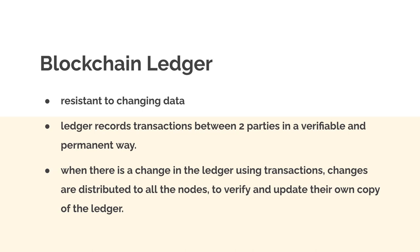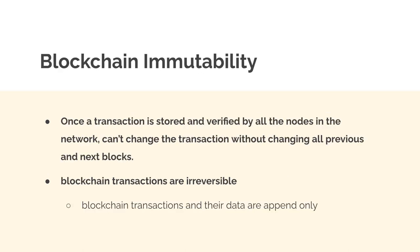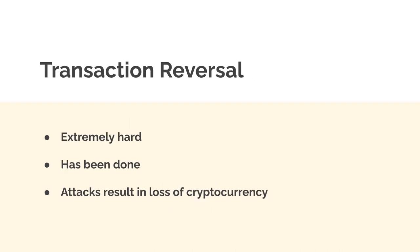When there's a change in the ledger — for example when a transaction is made, like if I send you some crypto — changes are distributed to all nodes in the network, and these nodes will verify and update their own copy of the ledger. A blockchain is immutable. Once a transaction is stored and verified by all nodes, we can't change it without changing all previous and next blocks. Therefore blockchain transactions are irreversible. Transactions and their data are append-only — you can't remove them from the blockchain.